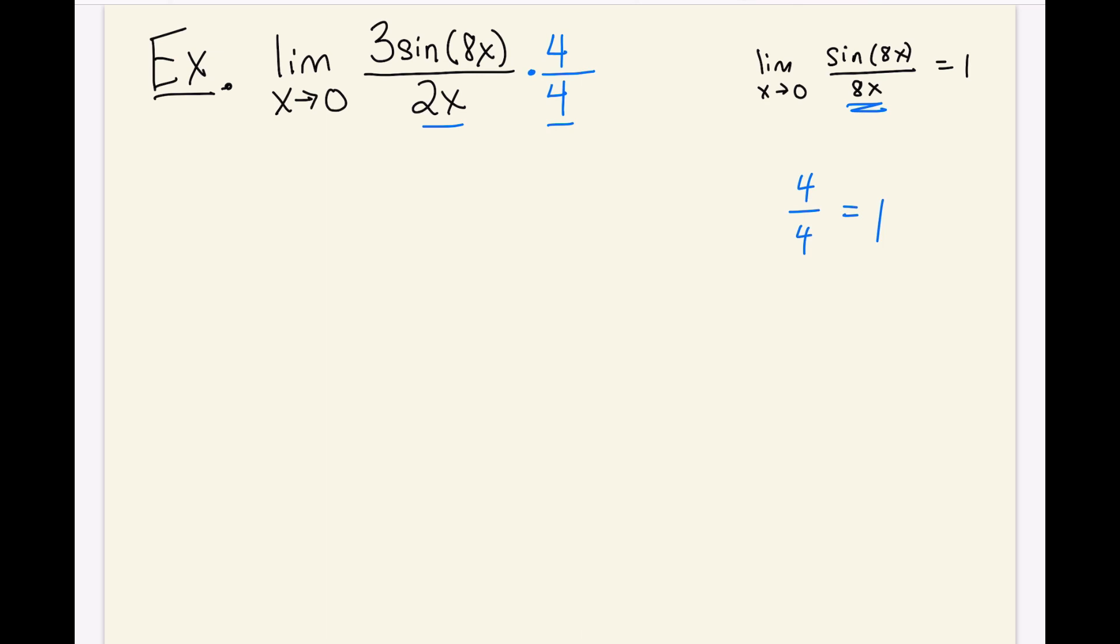So I haven't changed the function, but that will get me my 8x in the denominator. So let's do that. I end up with limit as x approaches 0 of 3 times sin(8x) times 4. I can't forget the 4 in the numerator. And then in the denominator I have 8x. Now what I notice is that the 3 and the 4 here, I can multiply those to get 12.